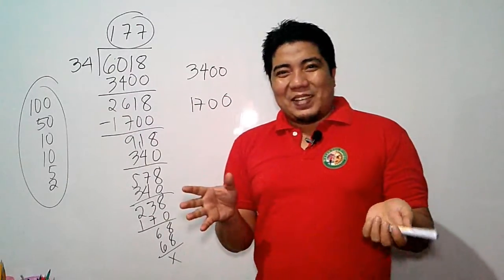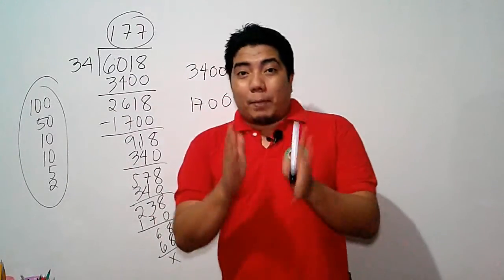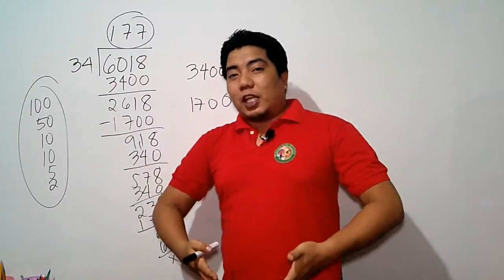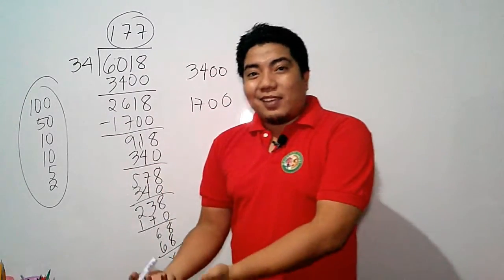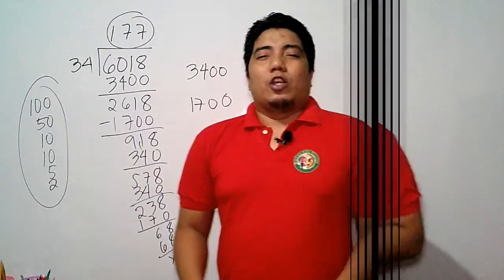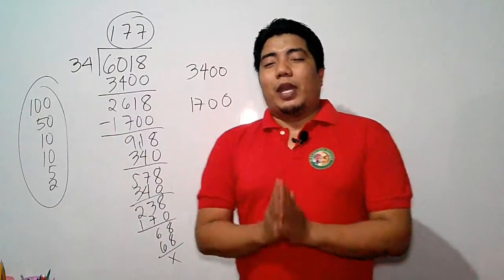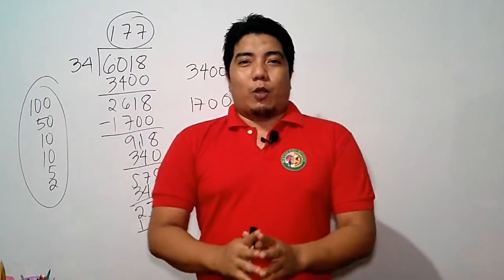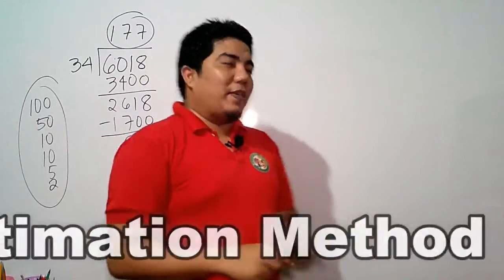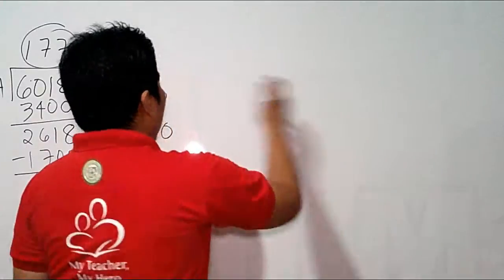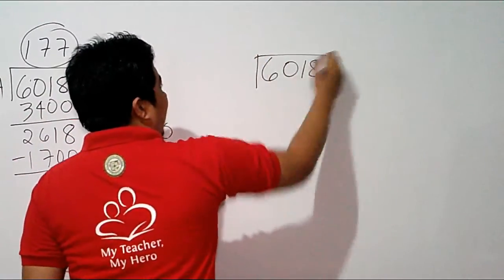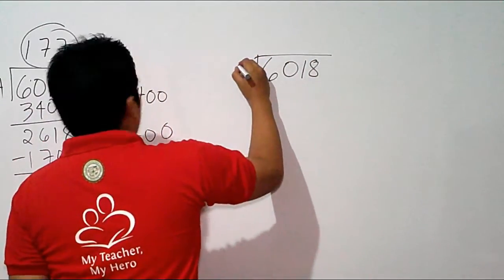This method might be long, but it gives us more efficiency in subtracting and multiplying numbers. The next method I will share is what we call the estimation method. How do we use estimation in dividing? Let's consider the same number: 6,018 divided by 34.